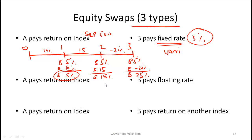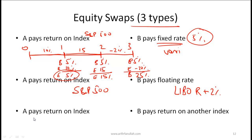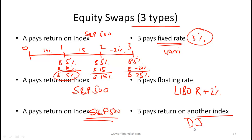The second type of equity swap has party A paying the return on an index (e.g., S&P 500) and party B paying a floating rate such as LIBOR plus 2%. LIBOR is determined at the beginning of every period, but the S&P 500 return is based on the overall period, so the payment is not known until the end of the period. The third type has party A paying based on one index (e.g., S&P 500) and party B paying based on a different index (e.g., the Dow Jones Industrial Average).